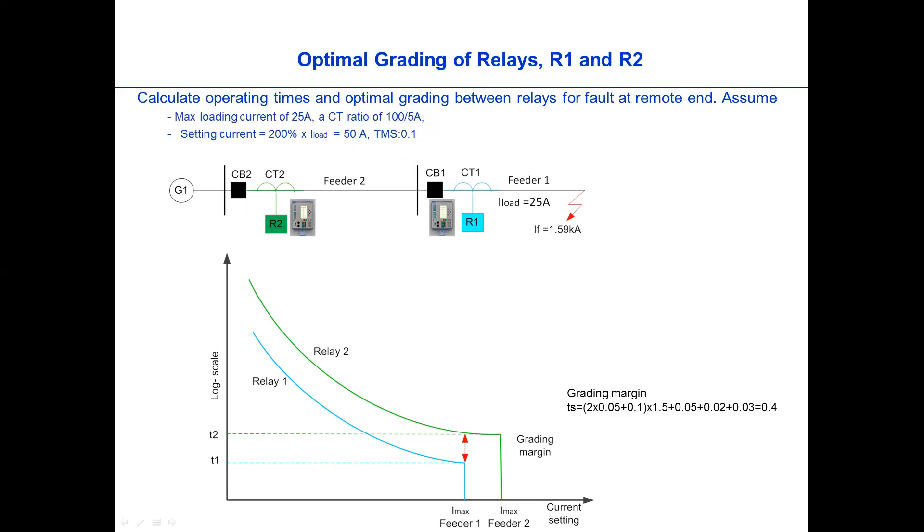The second guarantee is 3 times or 200% times the loading current. The loading current is 25, so 25 times 2 would be 50 Amps. And then suggesting the TMS value of 0.1, and with the standard inverse and the circuit breaker of 50 millisecond related and the CT ratio of 10%, we can calculate the related time.